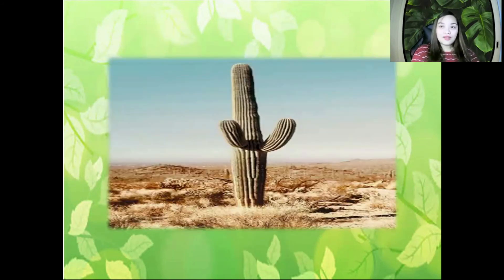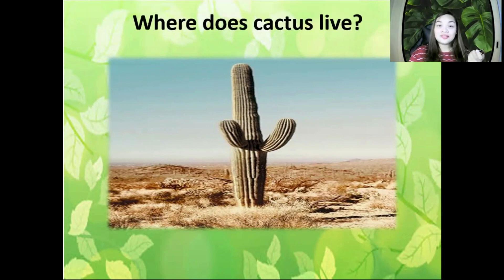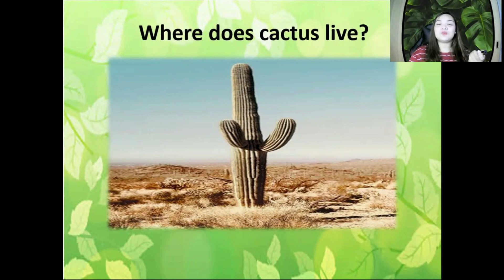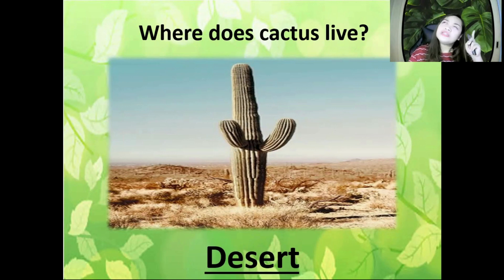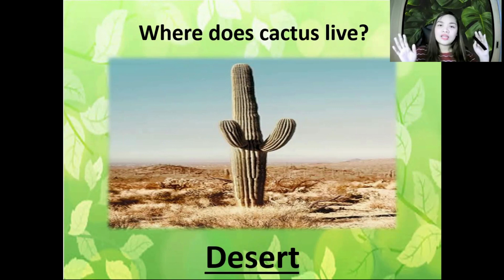Next, what is the name of this plant? It starts with the letter C. It's cactus. Where does cactus live? Cactus lives on the desert — it's very hot there. Only rare plants can survive in the desert, and one of them is the cactus.